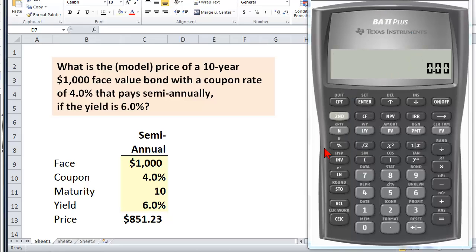I thought I'd start by showing how we use this calculator to answer one of the more common questions, and that is, what is the price of a bond? Here is a typical problem expressed as a word problem. What is the price of a 10-year, $1,000 face value bond with a coupon rate of 4% that pays semi-annually if the yield is 6%?